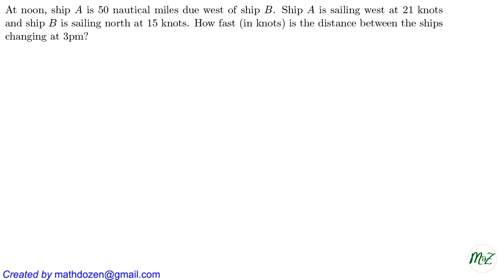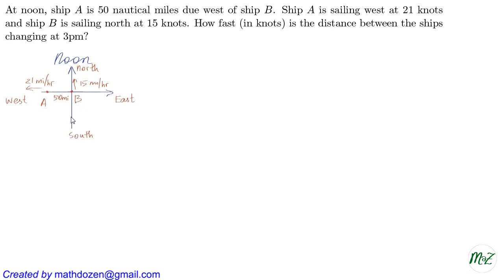To make better sense of this situation, we can make a sketch. We have Ship A that is 50 miles west of Ship B — west is the leftward direction in this picture. Ship A is sailing west at 21 nautical miles an hour, and Ship B is sailing north at 15 miles an hour. So Ship B is going up on the picture, and Ship A is going to the left.